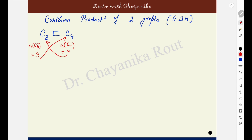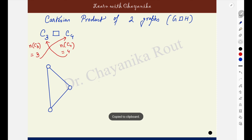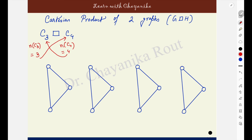Since there are going to be 4 copies of graph C3, I will draw 4 copies of C3. C3 is a cycle on 3 vertices, same as K3 — it is the triangle. I will have 4 copies of C3. Next, I will label the vertices of only one copy: label the vertices as 1, 2, 3, and use the same labeling for all the other copies of C3 as well — 1, 2, 3 in the same order for all copies.